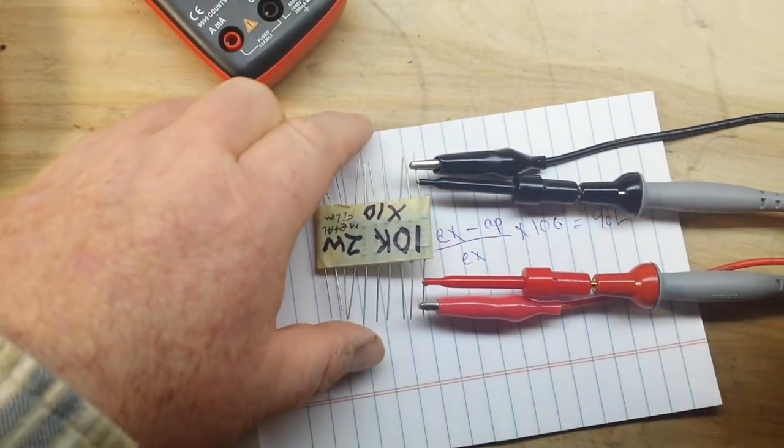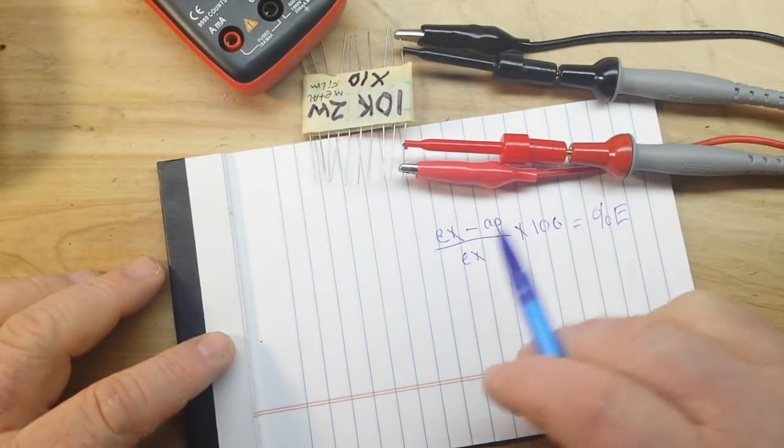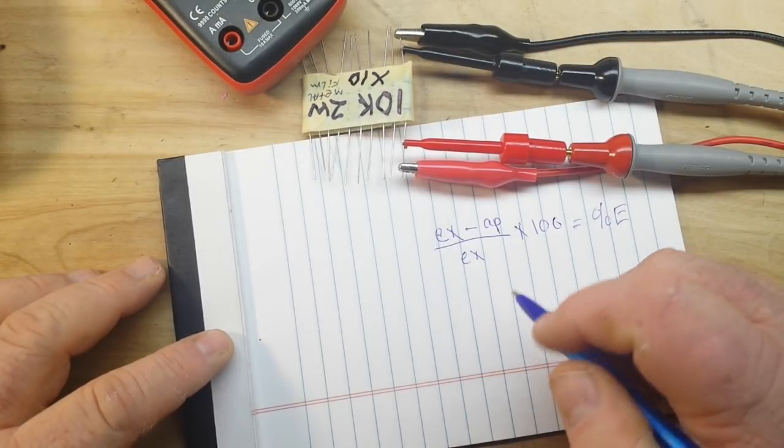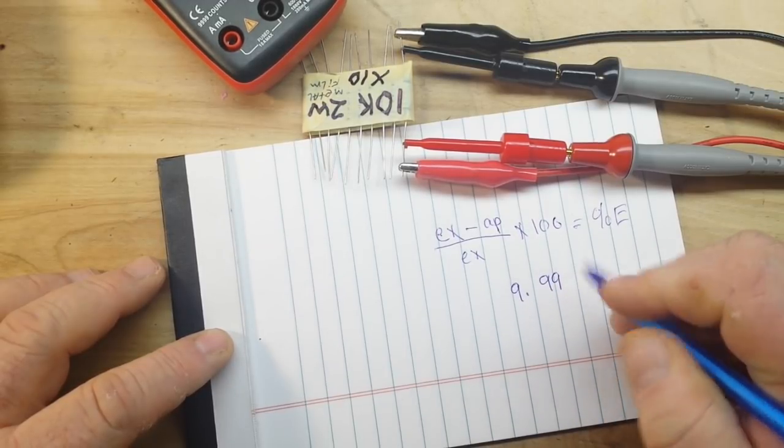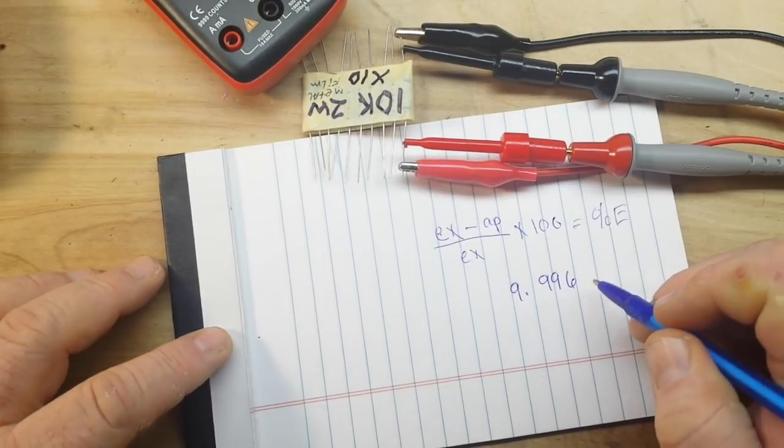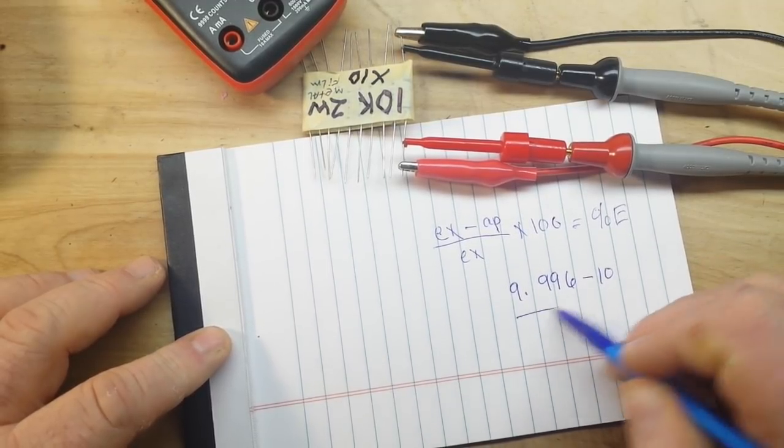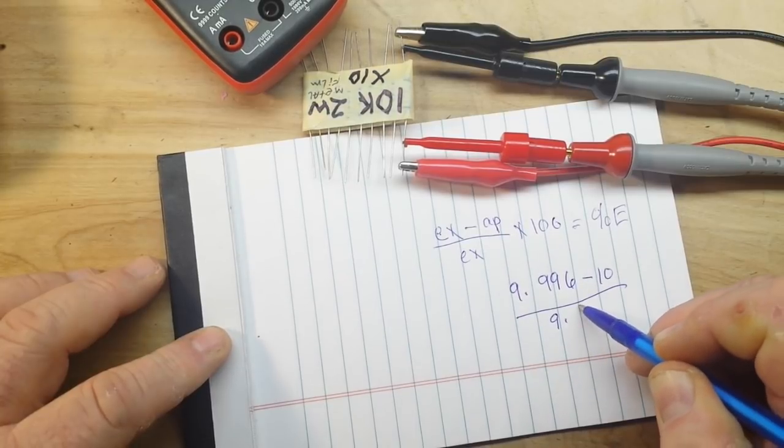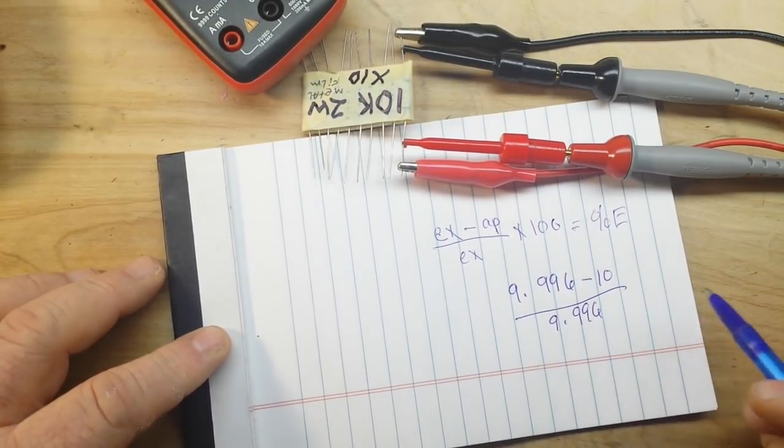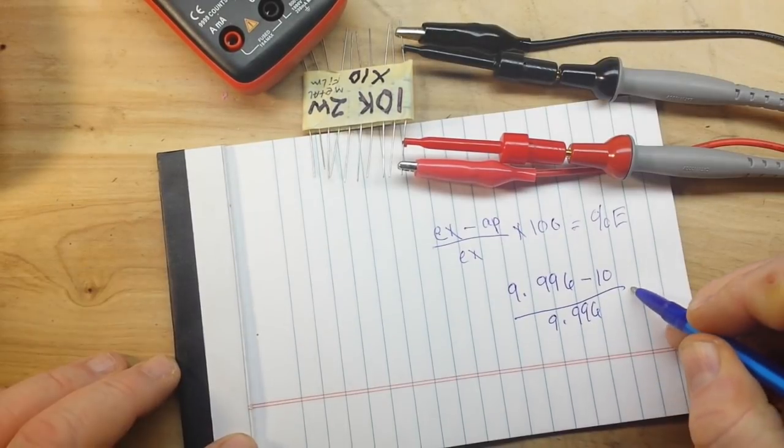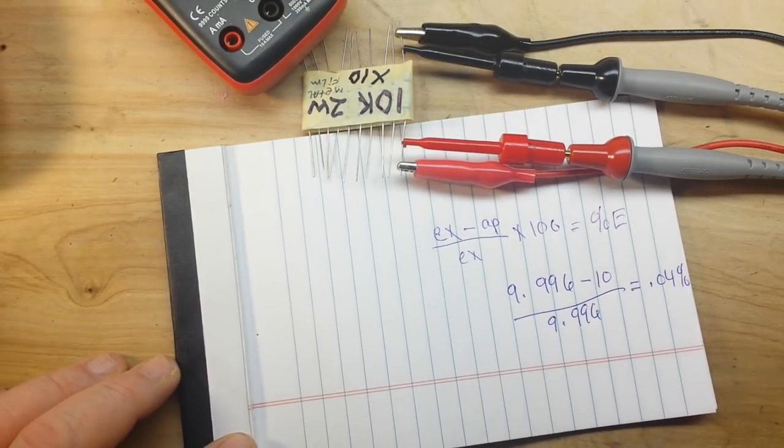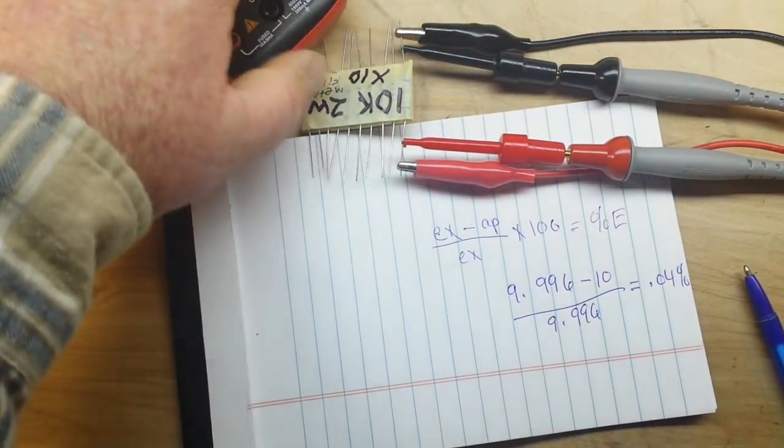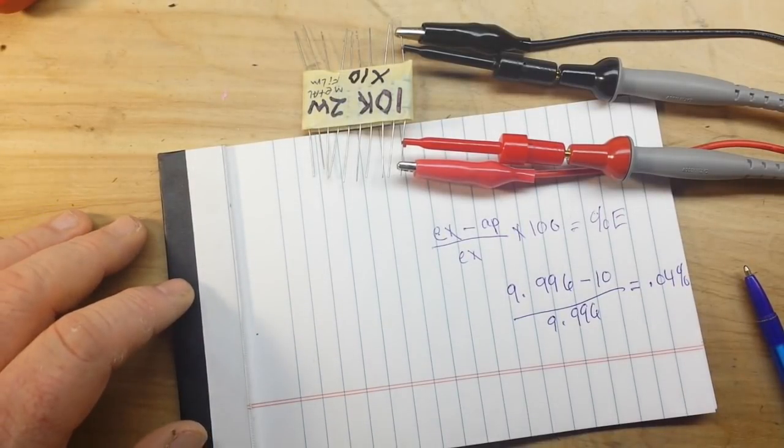If we take the reading from our Fluke and apply what we have here, so we say 9.996, which is where we're at right now, minus 10 over 9.996, and do the math, we get our answer: 0.04%. So that's well within spec of the 0.05. So I think we have a trustworthy enough reading.